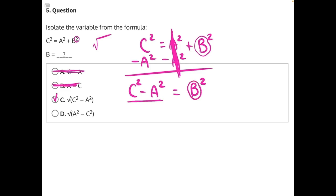The last step to isolating b is to get rid of this exponent. The opposite of an exponent is a radical, to the root of 2 in this case, since we have an exponent of 2.